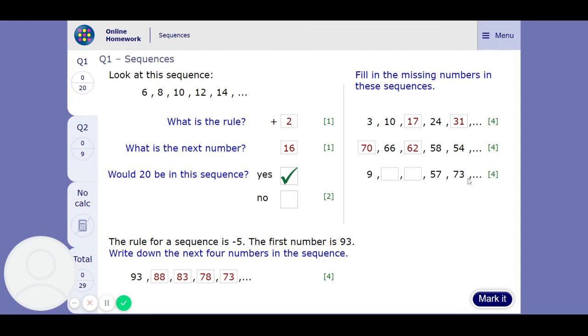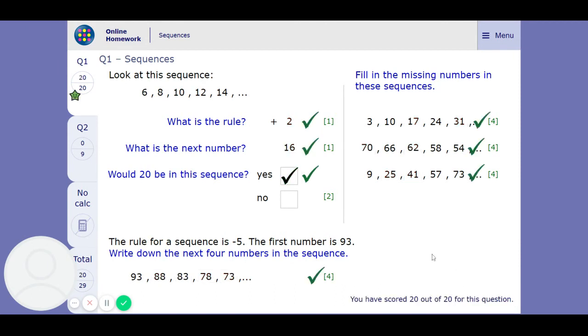So if we add 16 each time to go forwards, then to go forwards from 9 adding 16 will get me to 25. Adding 16 will get me to 41. Just check, add 16, yes you do get to 57. So if we press mark it, we've got them all right. That's great. On to question 2.